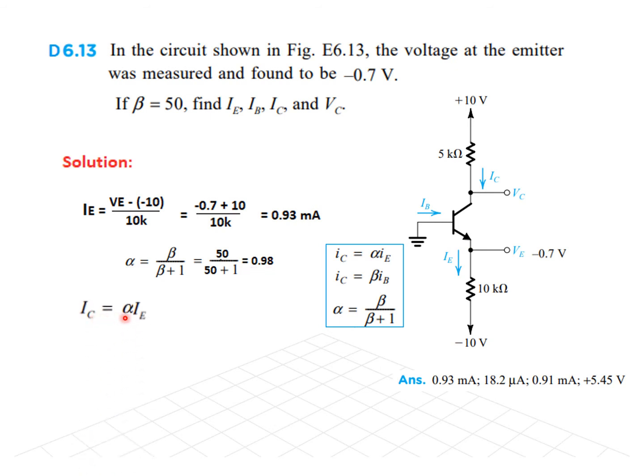And similarly, if you know IC, we can find IB. So, first of all, alpha. Beta divided by beta plus 1. Beta is given 50. So, alpha is 0.98. And therefore, IC is alpha IE. Putting in the values, alpha and IE. So, this is IC. Now, that we have known IC, we can find from here IB. So, IB will be IC over beta. Putting in the values, IB is 18.2 microampere.